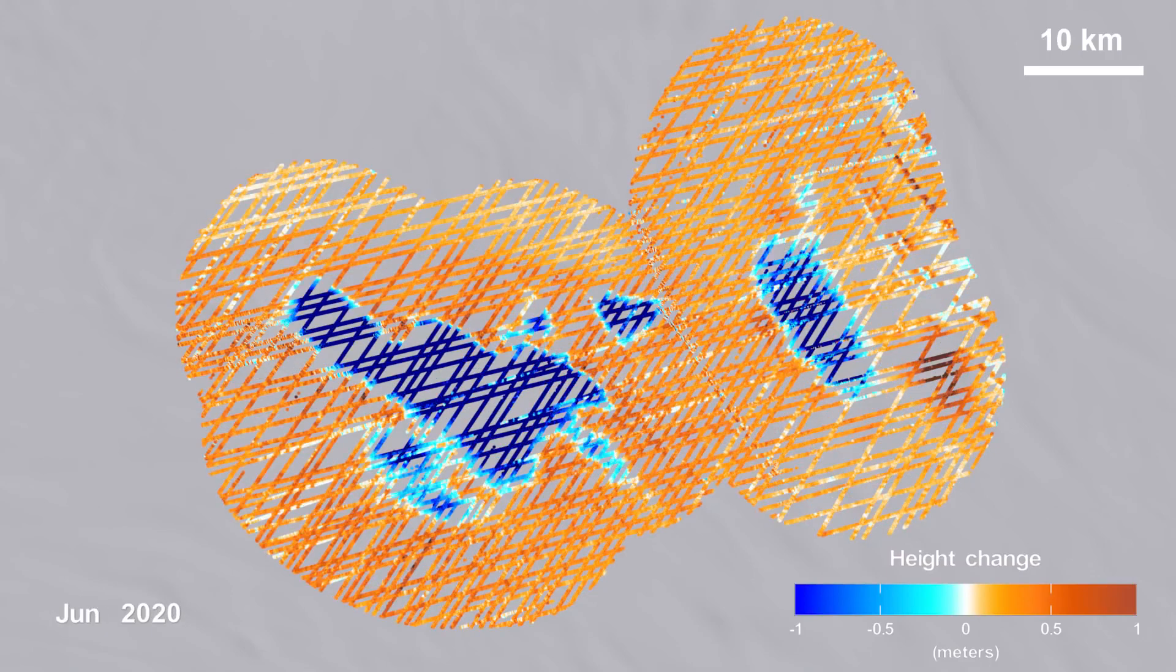Areas seen here in blue show that the surface of the ice is getting lower, which indicates that the lakes below are draining.